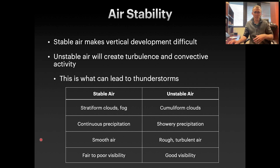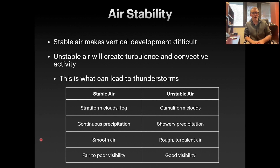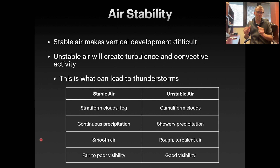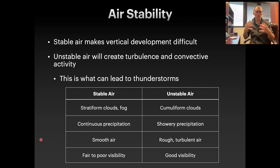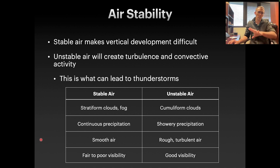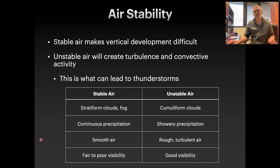Unstable air creates turbulence and convective activity — vertical air movement — which in the most extreme case can lead to thunderstorms. Unstable air is characterized by cumuliform clouds: those beautiful puffy white clouds on a nice summer's day are actually the beginning signs of unstable, vertically moving air. It also brings showery precipitation — short-duration rain as a front moves through — rough turbulent air, and generally good visibility. These characteristics and terms will show up on the Part 107 exam.